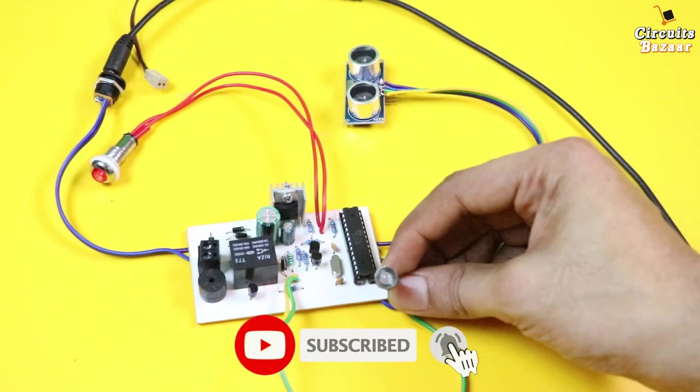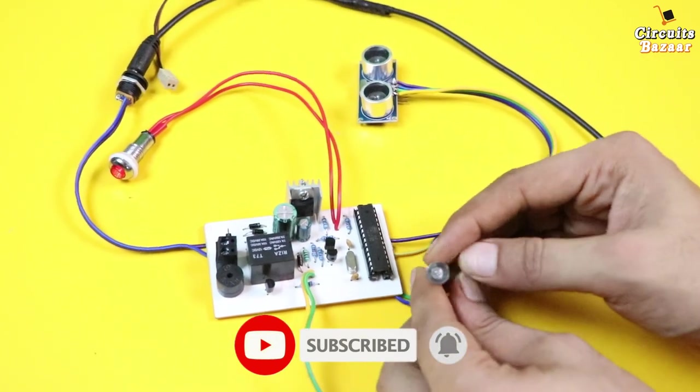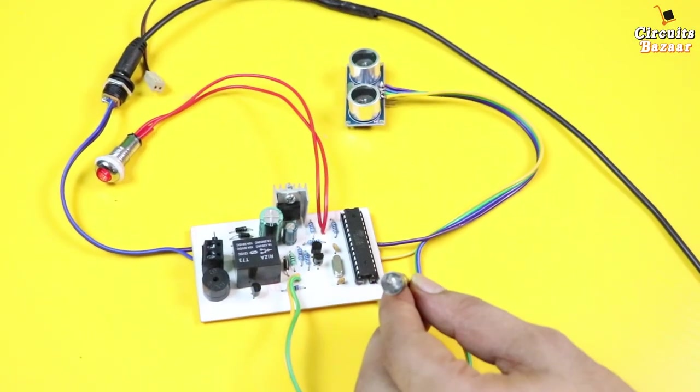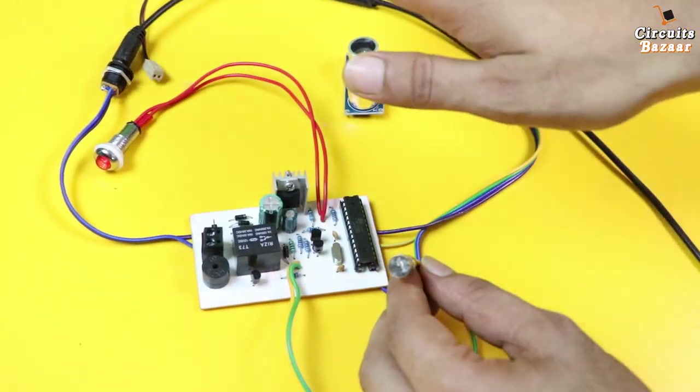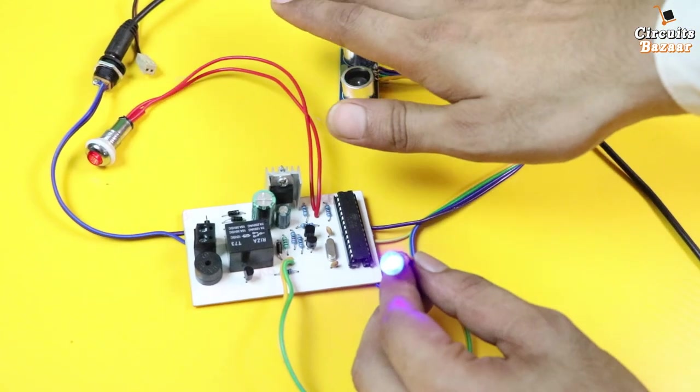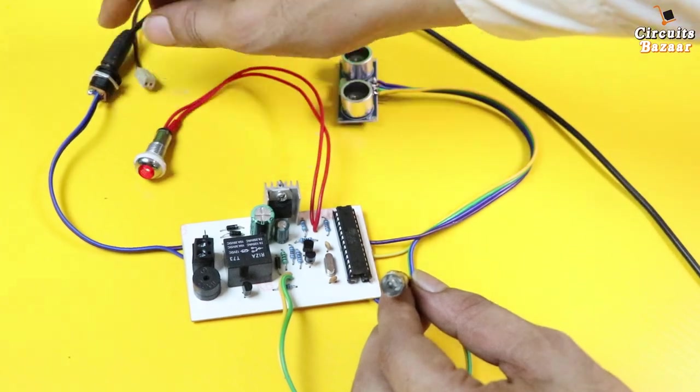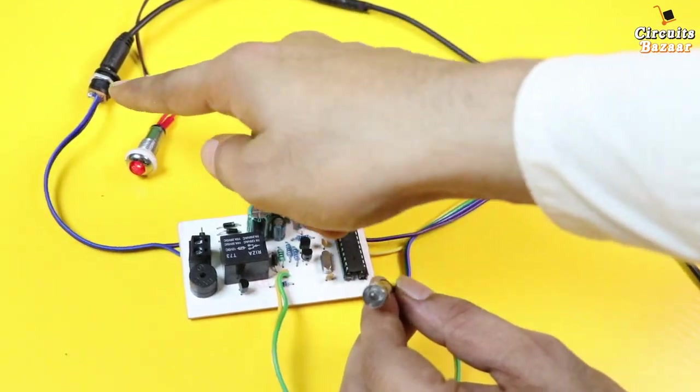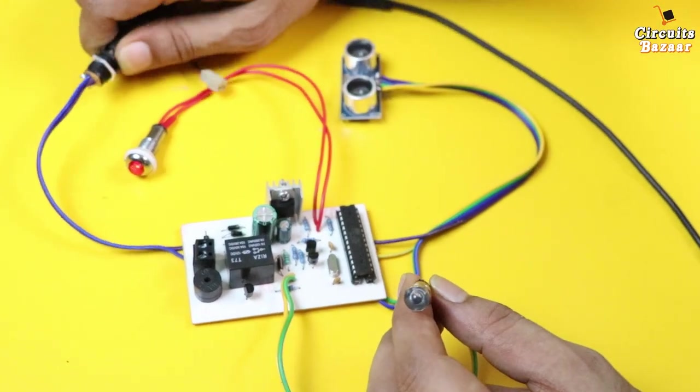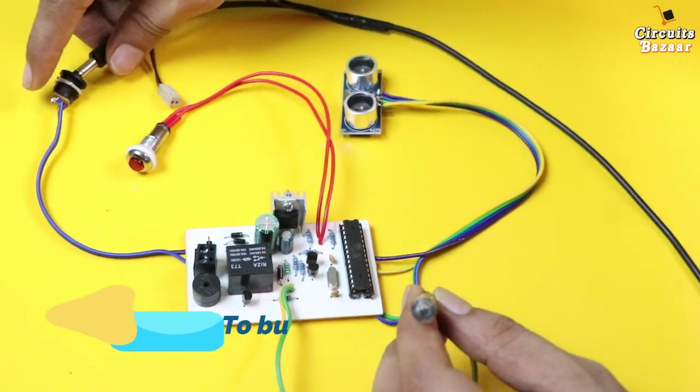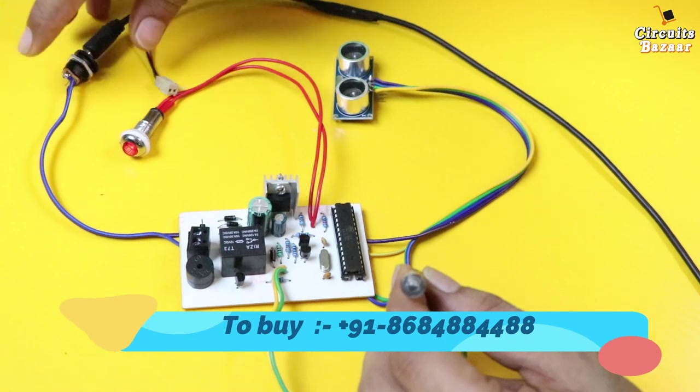Now you can see this is the blue color LED indicator. Whenever my hand will come, now you can see there is a buzzer beep as well. This power indicator is on all the time. This is power LED indicator. Whenever you will remove the power supply, then you can see this power LED indicator will be off. Whenever you will apply power supply, then this will be on.